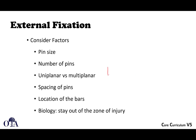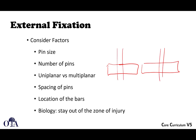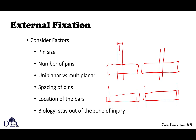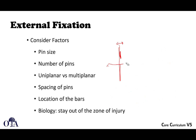How much you space your pins also matters. If you have two bone fragments and you place two pins close together on each side, that's not nearly as stable as if you space your pins out — one near the fracture and one far on each side. When pins are very close to each other, they're almost acting like one pin. When you space them out, you get maximal control of the full length of the bone. Try to space your pins to increase stability, though sometimes you can't due to soft tissue reasons.